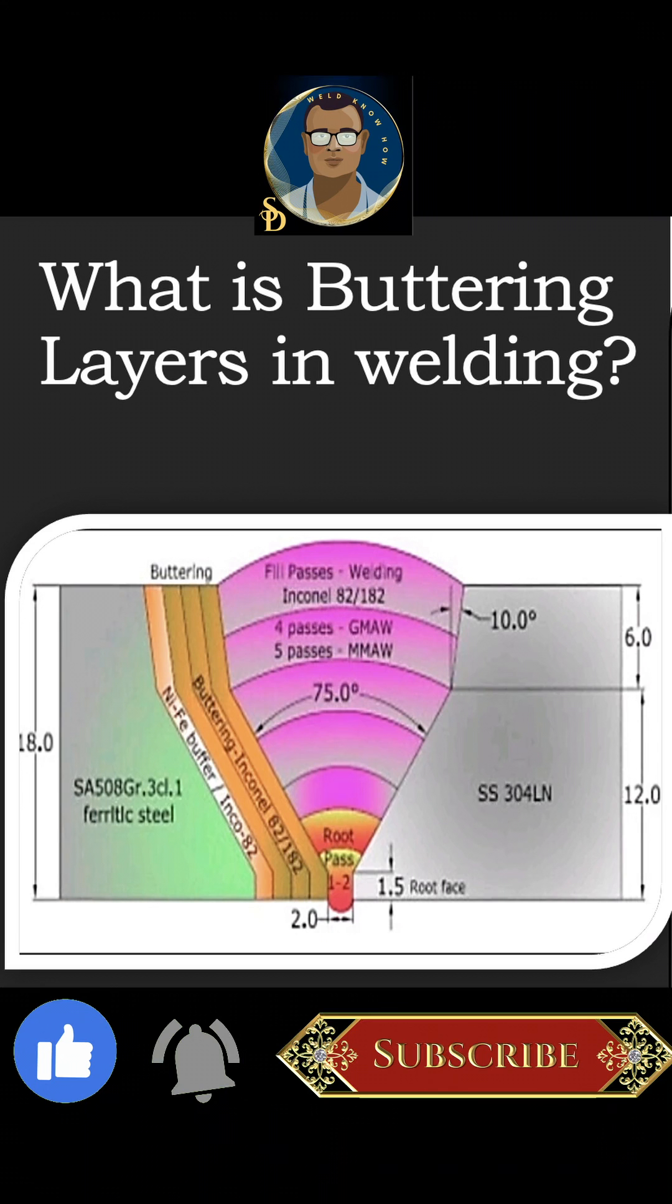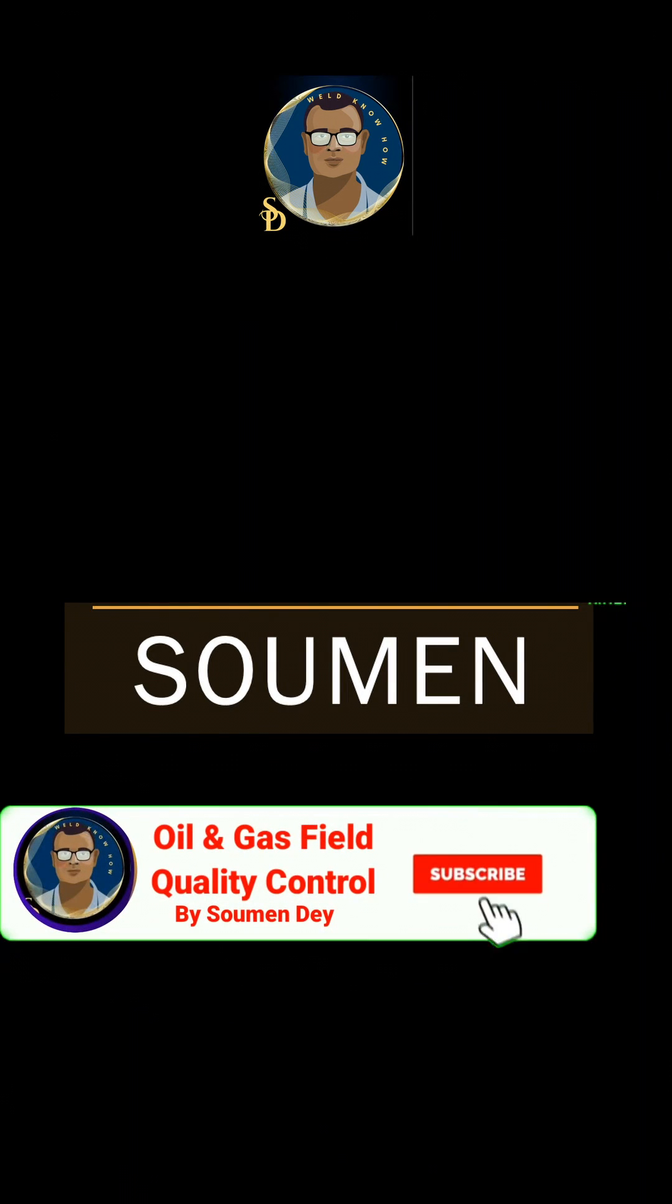Copper can be welded to steel using a nickel buttering alloy layer. After the nickel buttering filler alloy is laid down, a steel electrode can be used to complete the weld joints to the steel part.